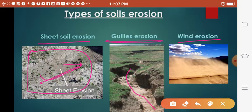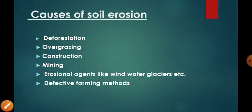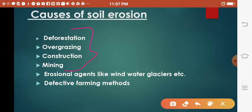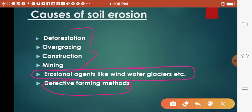Causes of soil erosion include deforestation, overgrazing, construction, and mining — all activities done by humans. Erosional agents like wind, water, and glaciers are natural causes of imbalance. Defective farming methods are also human-caused. These human activities result in imbalance between the rate of soil formation and erosion.